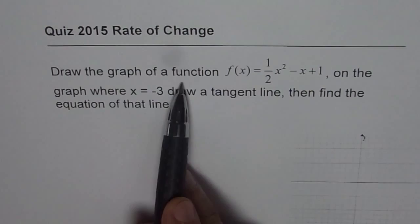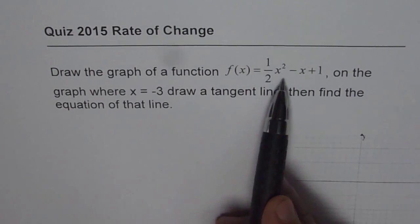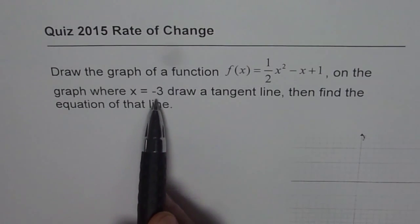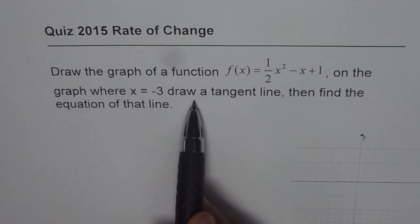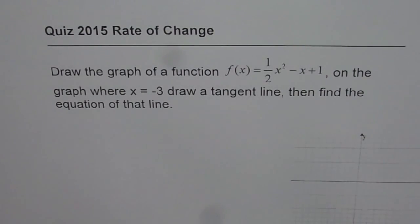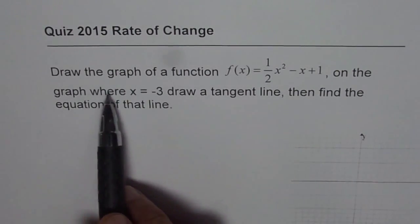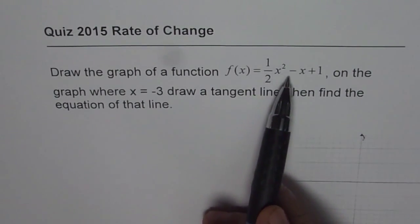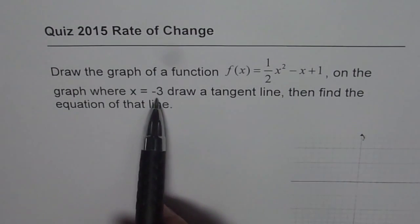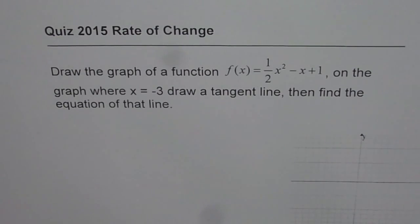The question here is, draw the graph of function f(x) equals 1/2 x² minus x plus 1. On the graph where x equals minus 3, draw a tangent line then find the equation of that line. So I'd like you to pause this video and on a graph sketch the graph of 1/2 x² minus x plus 1, and then at x equals minus 3 you need to draw a tangent line and find its equation. So that is the question, how should we go about?